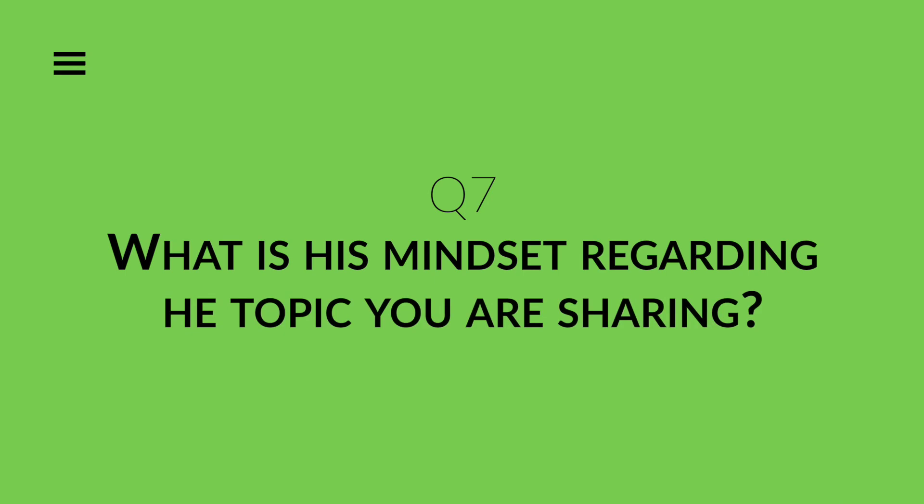Question number seven: what is his mindset regarding the topic you are sharing? What are his fears? What are his biases? What are his needs? For example: 'Will it be difficult? What if I'm not able to do what the author teaches me? Do I need additional skills? Do I need to know the basics of coding? What about bringing visitors to the website?' In other words, you need to identify possible objections that your potential clients could have regarding your product or service.